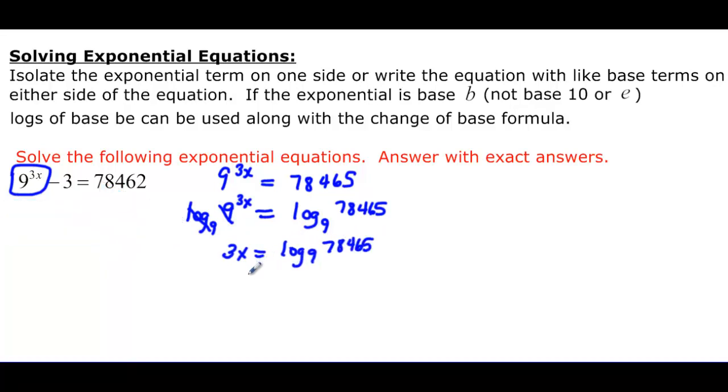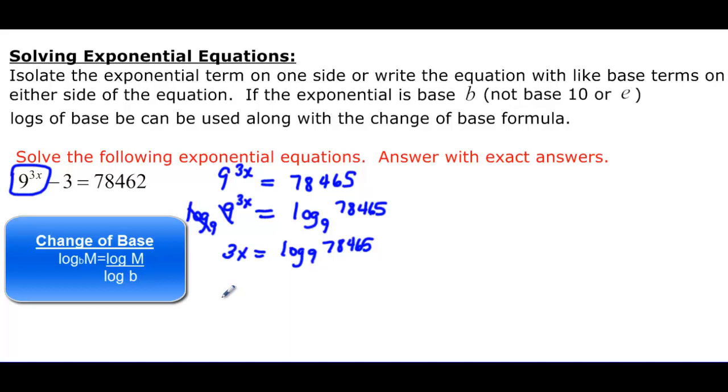And then we have this case here now where we can convert this and change the base on it. That would give us the most exact answer that we could put in our calculator and round if we wanted to. So we can say that this is 3x is equal to, remember it's the log of the argument, so log 78,465 over the log of the base, which is log 9.